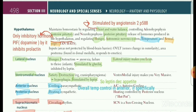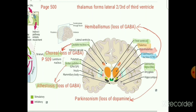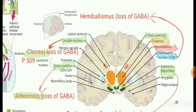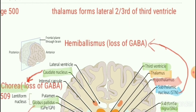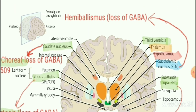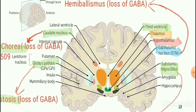Before we move on to the physiology, we should learn something about the anatomy that is given on page 500. We can see here that there are lateral ventricles, and two lateral ventricles downward is the third ventricle. The third ventricle is bounded laterally by thalamus — the most part of it, two-thirds in fact. So it's asked in MCQ that the thalamus forms the lateral two-thirds of the third ventricle. Below thalamus is hypothalamus, which controls the pituitary secretions. Subthalamic nucleus is below hypothalamus.